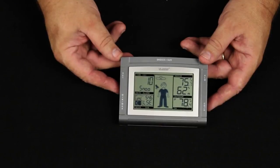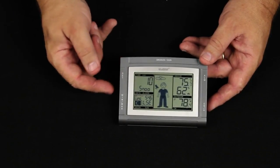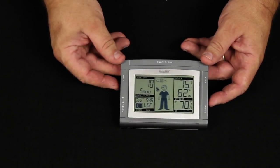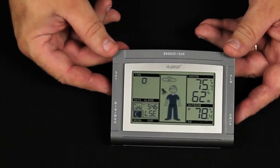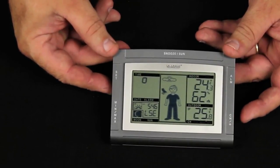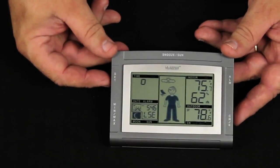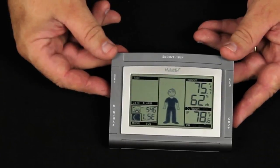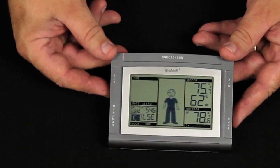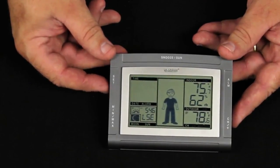Pressing the set button once again gives me the ability to set my snooze alarm. Pressing the set button once again gives me the option of Fahrenheit or Celsius temperatures. I'm going to put it in Fahrenheit with the plus button. Pressing set once again gives me a forecast sensitivity. Unless I live on the seashore or in the mountains, I'm going to leave that at 2.